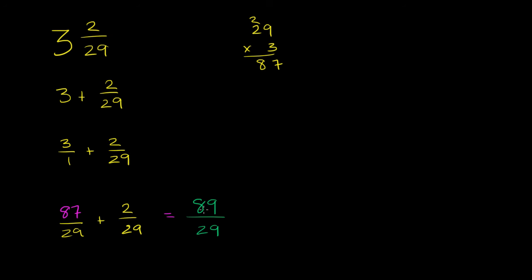We've written this as an improper fraction. The numerator is greater than or equal to the denominator. A quick way to think about it: just take 29 times 3 gives you 87, 87 plus 2 is 89, so 89/29.